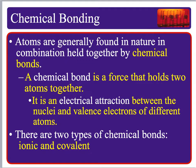To back up a little bit, we're going to talk about what is a chemical bond and why do atoms form chemical bonds. Atoms are generally found in nature in combination held together by a chemical bond — basically a force that holds two atoms together. It's an electrical attraction between the nuclei and the valence electrons. The valence electrons are those outermost electrons and they're the ones involved in chemical bonding.